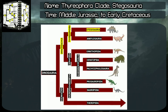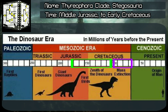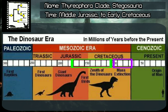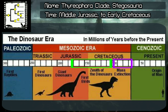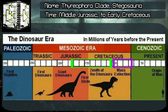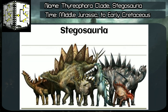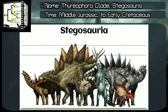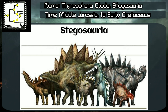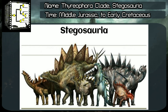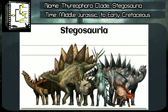Thyreophora clade, Stegosauria suborder, classified by Othniel Charles Marsh, year 1880. Time range: Phanerozoic Aeon, Mesozoic Era, middle Jurassic to early Cretaceous periods, something around 170 to 100 million years ago — possibly extending to the late Cretaceous. From Greek, Stegosauria means roofed lizards. They are quadrupedal herbivores with plates embedded along their back, and can also have spikes at the tail tip. Their heads are small, hind legs are larger than the forelegs, and their walking is heavy and slow.